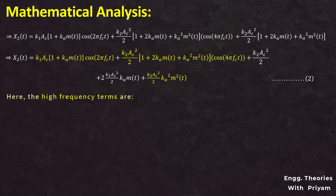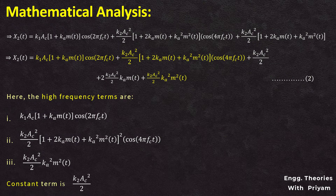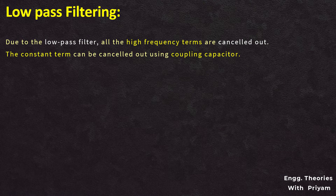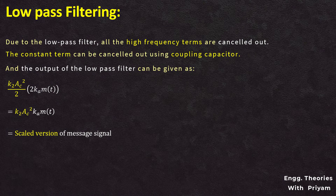In equation 2, the high-frequency terms are: K1·AC·(1 + Ka·m(T))·cos(2π·fc·T) and K2·AC²/2·(1 + 2·Ka·m(T) + Ka²·m²(T))·cos(4π·fc·T). The constant term K2·AC²/2 is cancelled by a coupling capacitor. Due to the low-pass filter, all high-frequency terms are cancelled out, and the output of the low-pass filter is K2·AC²/2 × 2·Ka·m(T) = K2·AC²·Ka·m(T). This is a scaled version of the message signal m(T), scaled by factors K2, AC², and Ka.